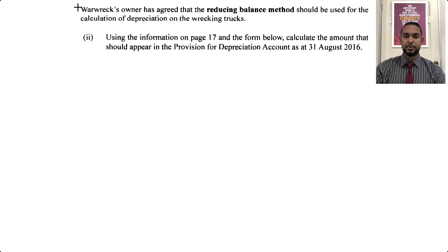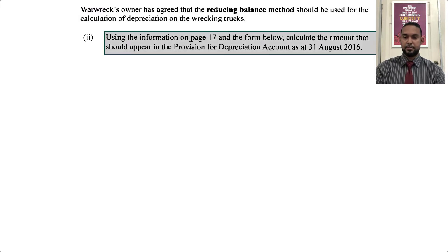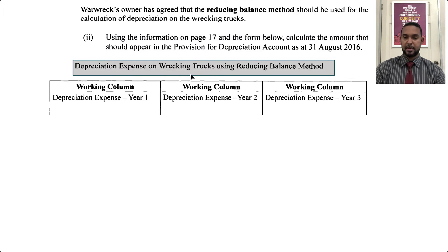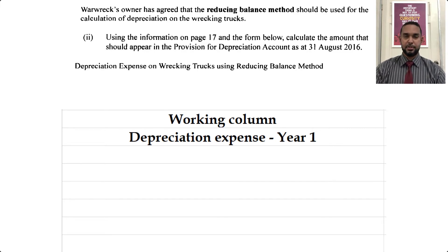Okay, let's take a look at the next part of the question. Warwick's owner has agreed that the reducing balance method should be used for the calculation of depreciation on the wrecking trucks. So using the information, calculate the amount that should appear in the provision for depreciation account as at 31st August 2016 — depreciation expense on wrecking trucks using the reducing balance method. They give you a table with three headings, which I have reproduced. We are going to recalculate depreciation starting from year one using the reducing balance method at 30% per annum.